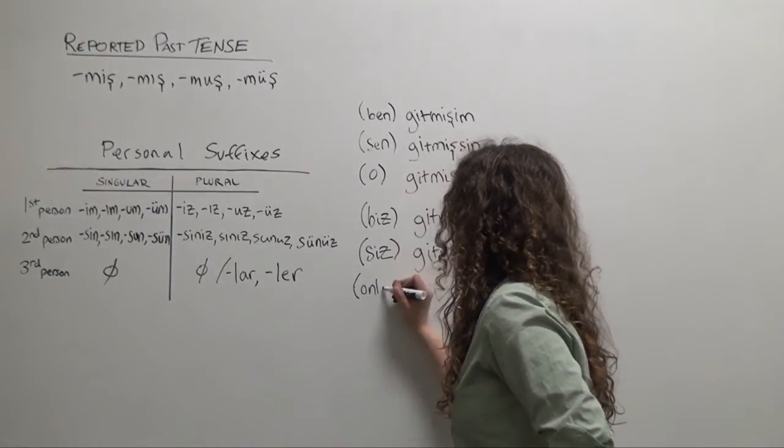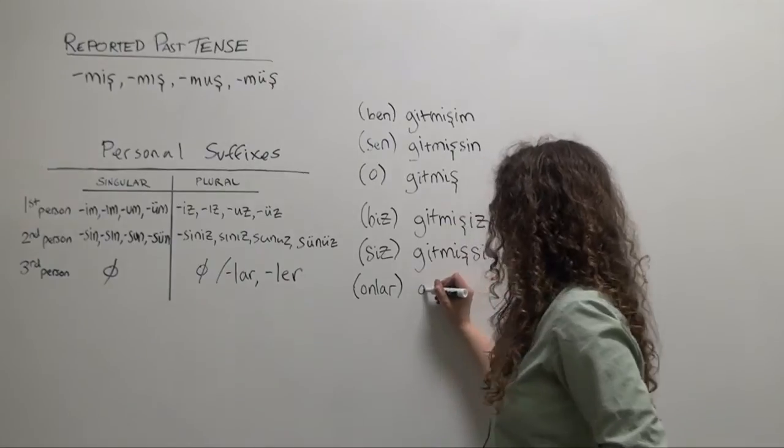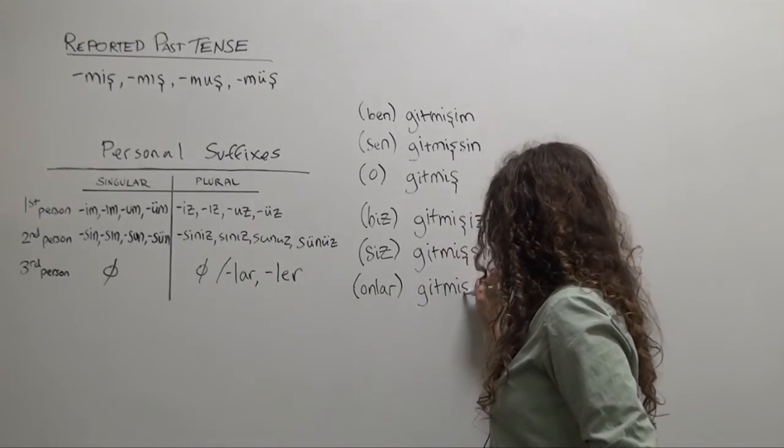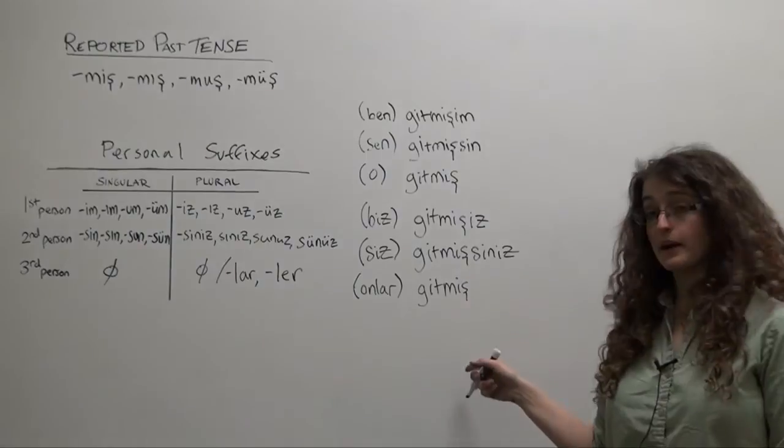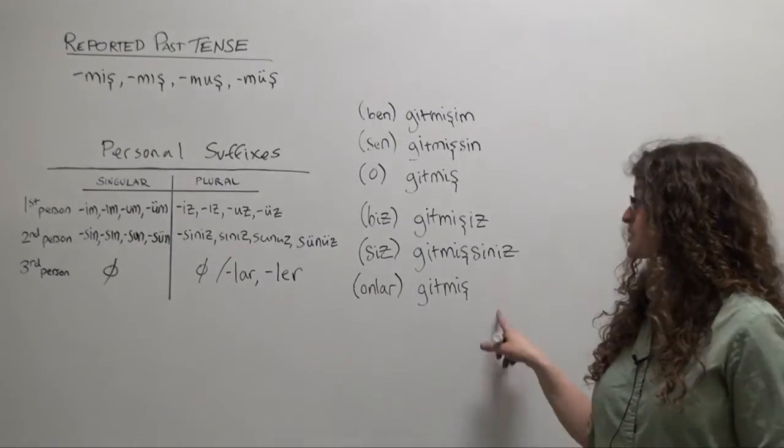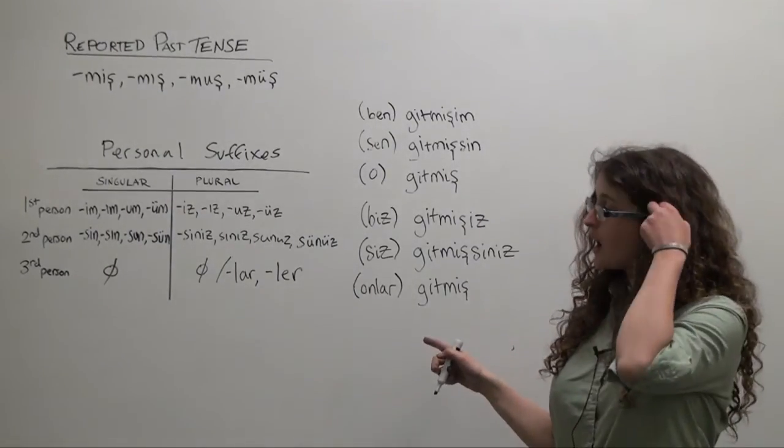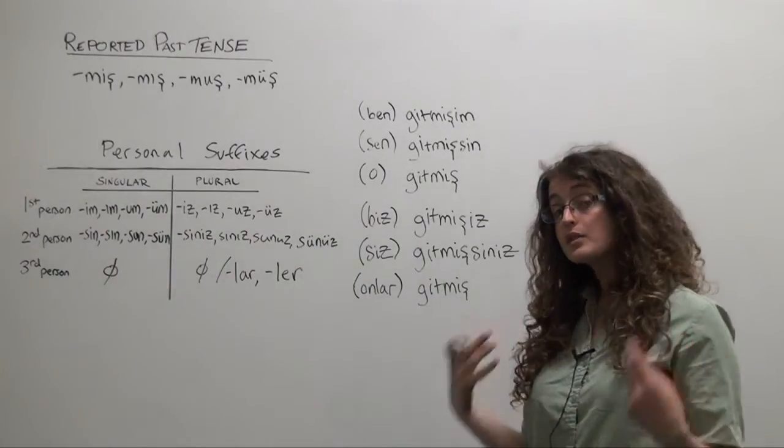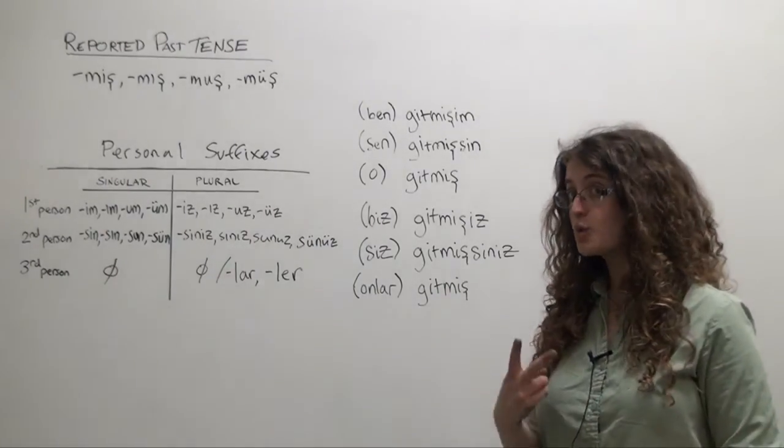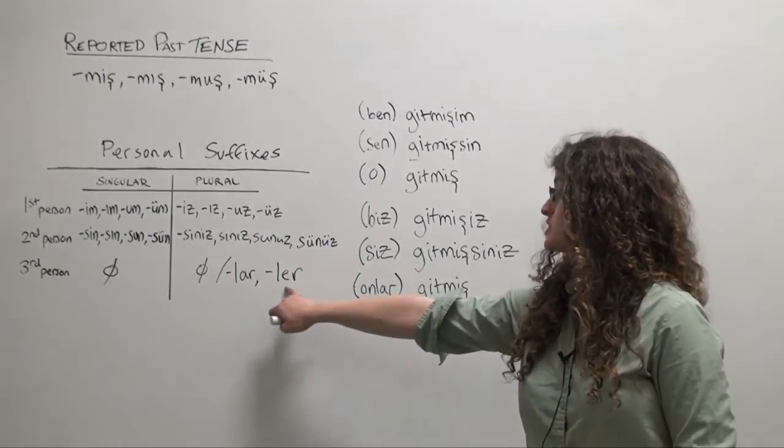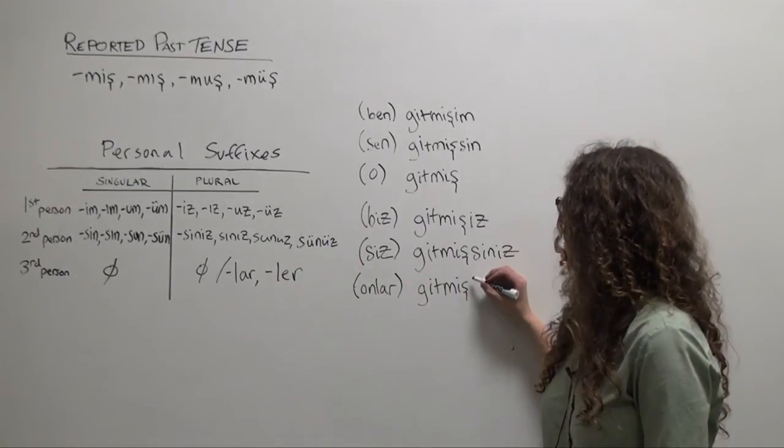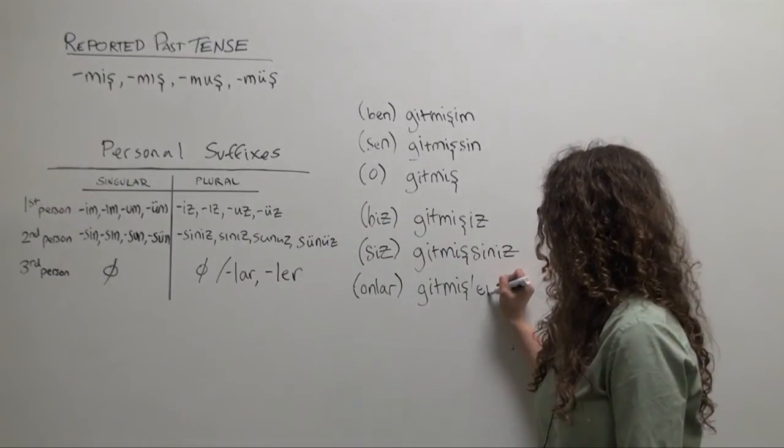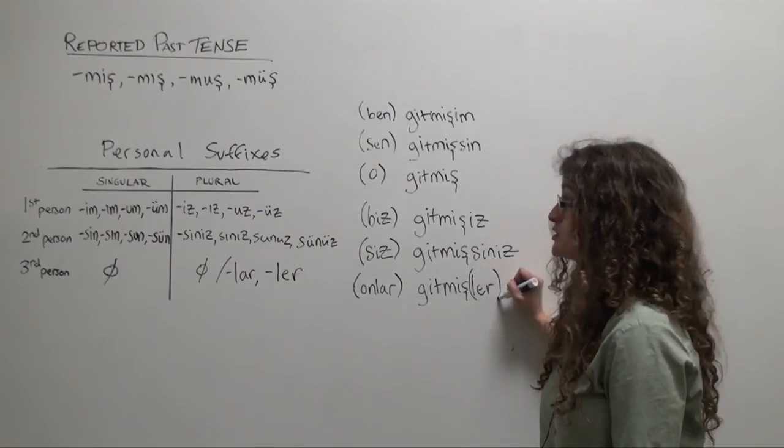And finally, onlar, they. Gitmiş. They apparently went, or we have the option of adding to gitmiş the appropriate plural suffix according to the rules of two-way vowel harmony, so gitmişler. Onlar gitmişler, they apparently went. This as I say is optional.